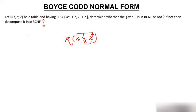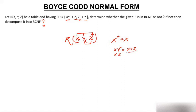First, find the candidate keys. Determine attributes that do not appear on the right-hand side of any FD — X does not have an arrow. Finding closure of X: with only X, we cannot use XY → Z (missing Y) or Z → Y (missing Z), so X⁺ = {X}. X alone is not a candidate key. Now try XY: closure of XY gives X, Y, and using XY → Z also gives Z — all attributes determined, so XY is a candidate key. Try XZ: closure of XZ gives X, Z, and using Z → Y also gives Y — all attributes determined, so XZ is also a candidate key.